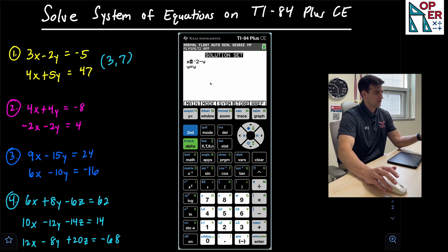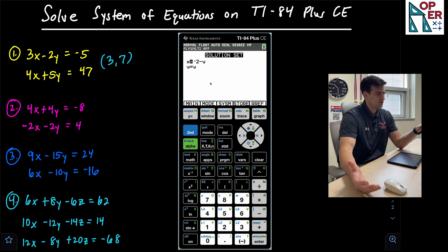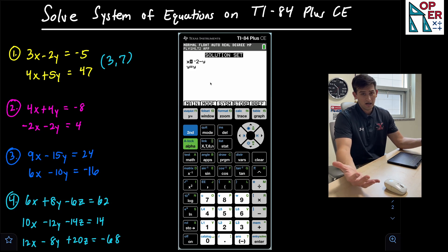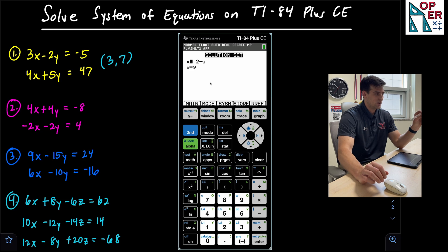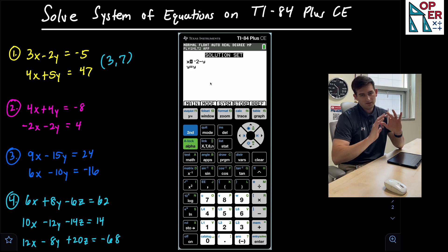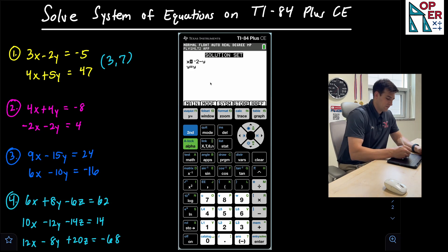And now look what it says. It says X equals negative two minus Y and Y is equal to Y. So essentially when it says Y is equal to Y, that's telling me there are infinitely many solutions.